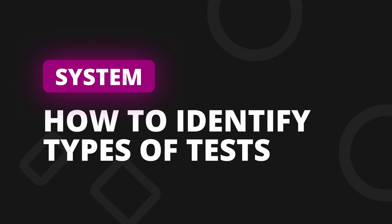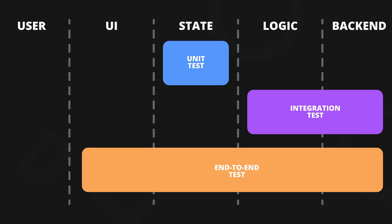My easy system to remember the definitions of these goes as follows. Imagine your application divided into five lanes: user, UI, state, business logic, and backend. A test that only operates in a single lane is a unit test. A test that covers two or more lanes is an integration test. A test that covers all the lanes is an end-to-end test. It's that simple — we don't need any fancy explanations or technical terms to describe these types of tests.